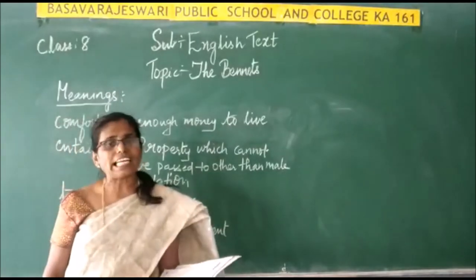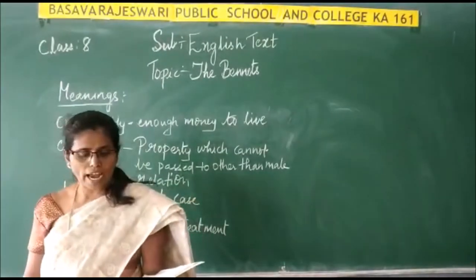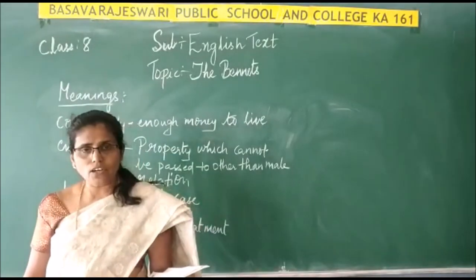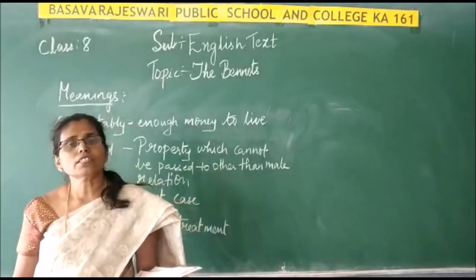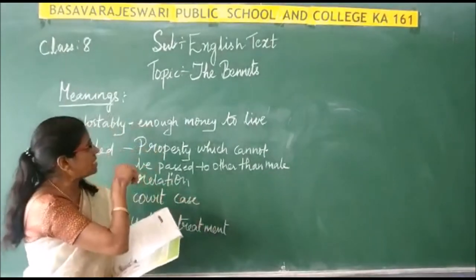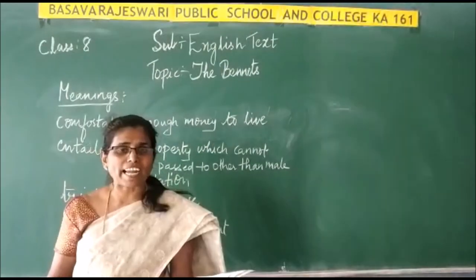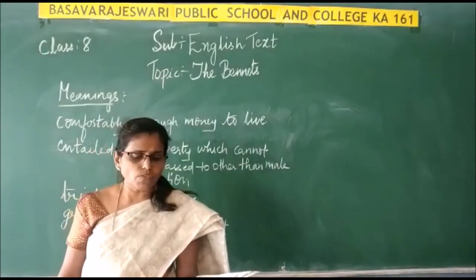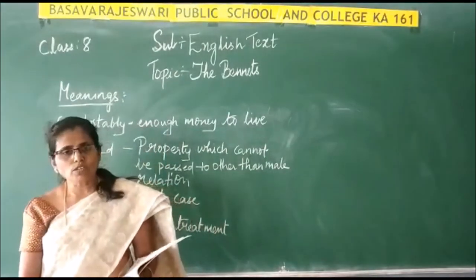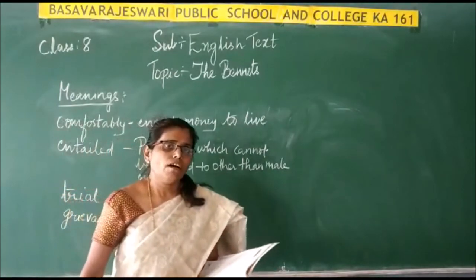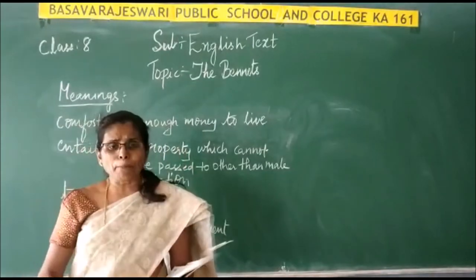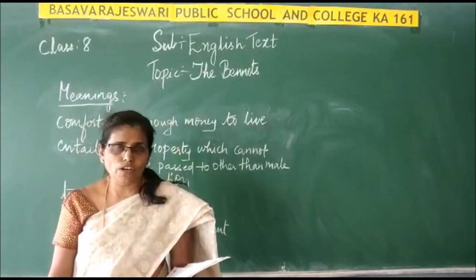Jane Austen was an English novelist who had written six novels. Among them, one was Pride and Prejudice. This extract of the lesson was taken from the Pride and Prejudice novel and she was born in 1775. During that time, the social conditions and circumstances she had to face were written in that novel.